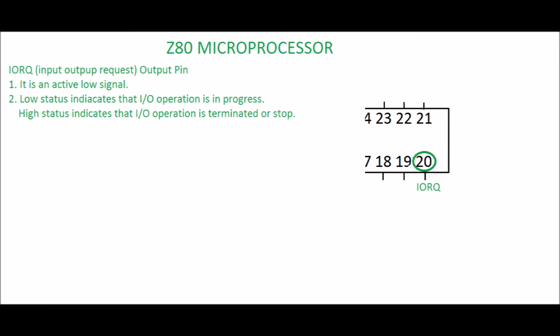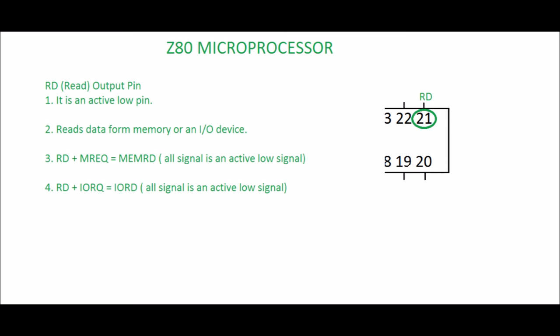Pin 20: IORQ, Input Output Request. It is an output pin. It is an active low signal. Low status indicates that an I/O operation is in progress, while high status indicates that the I/O operation is terminated or stopped.